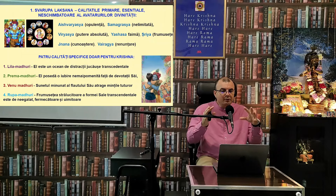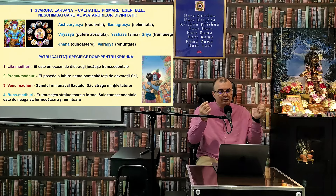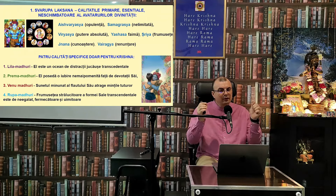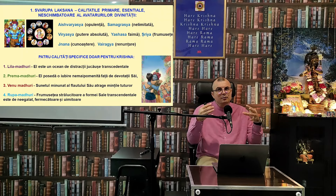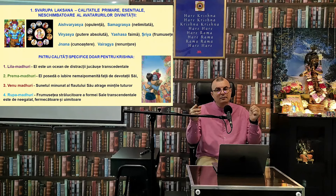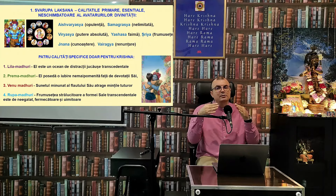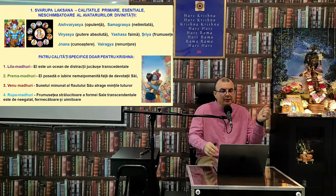A doua calitate unică este Prema Madhuri — el posedă o iubire nemaipomenită față de devotații săi, iar ei la rândul lor posedă Prema față de Divinitatea Supremă. A treia este Venu Madhuri — Krishna posedă un flaut al cărui sunet dulce și minunat atrage mințile tuturor entităților vii. Chiar entitățile nemișcătoare încep să se miște — aceasta este starea extatică și puterea transformătoare a acelui sunet.